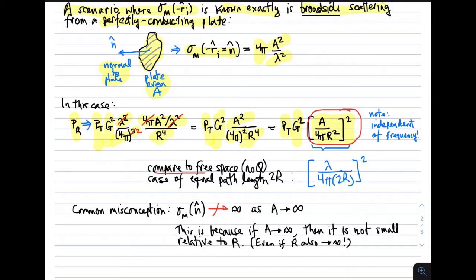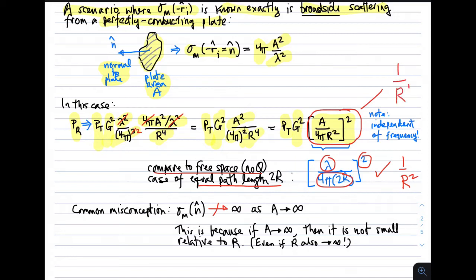Comparing this to free space with equal path length 2R, the free space Friis equation gives path gain as lambda over 4 pi times 2R, quantity squared — so path gain goes as 1 over R squared. In the scattering case, path gain goes as 1 over R to the fourth. Furthermore, in the scattering case, the result is independent of frequency — there is no wavelength factor — whereas in the free space case, the result depends on wavelength.